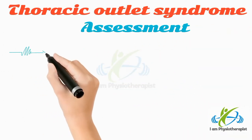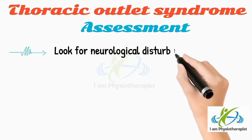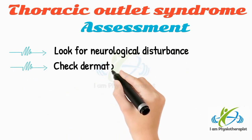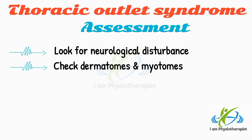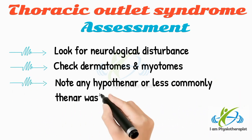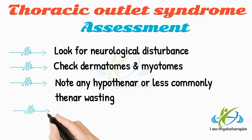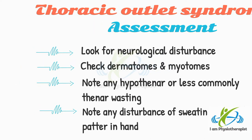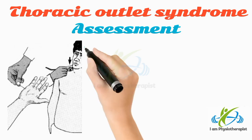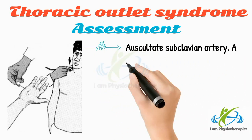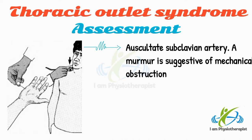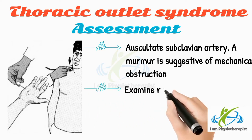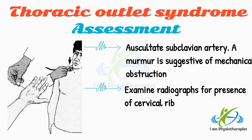For further assessment of thoracic outlet syndrome, look for neurological disturbance. Check dermatomes and myotomes. Note any hypothenar, or less commonly thenar, wasting. Note any disturbance of sweating pattern in the hand. Auscultate the subclavian artery — a murmur is suggestive of mechanical obstruction. Check both sides. Examine the radiographs for the presence of a cervical rib.